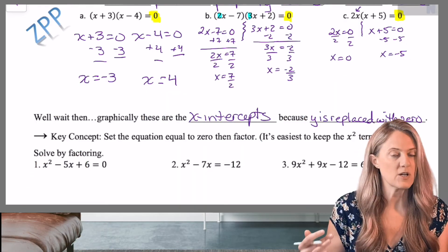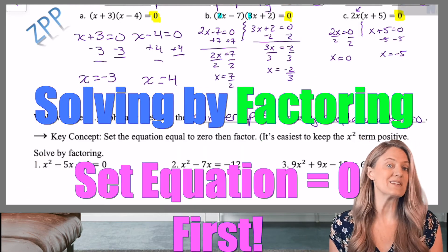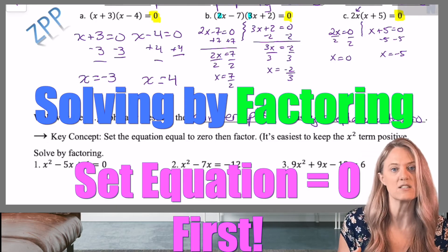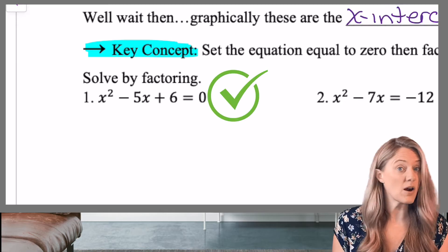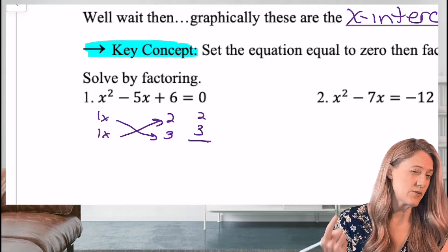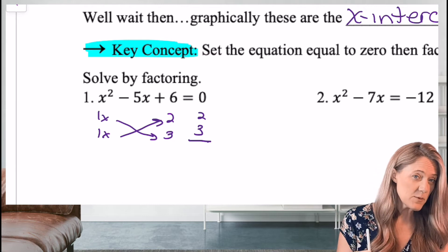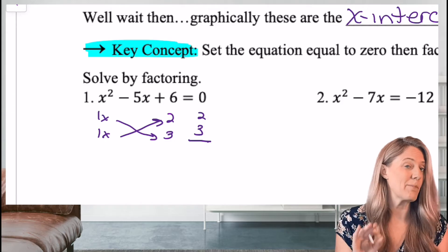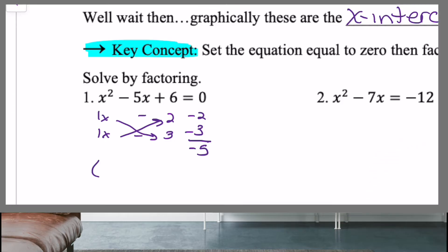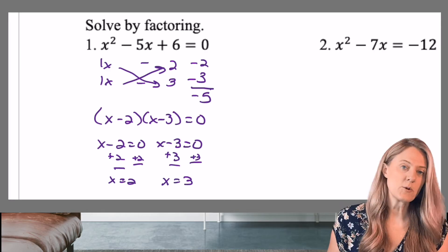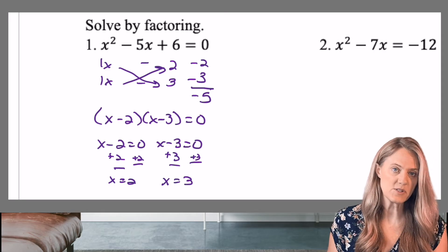Key concept here when solving by factoring, we need the equation to be set equal to zero. And then we use our crisscross method to factor. As I look at number one, it's already set equal to zero. So we're set to go. Let's go ahead and crisscross. Now the C value is positive. The B value is negative. So that means that both signs have to match. And because B is negative, they're both negative. And there we have it. The two solutions, X equals two, X equals three.